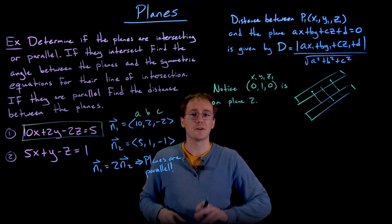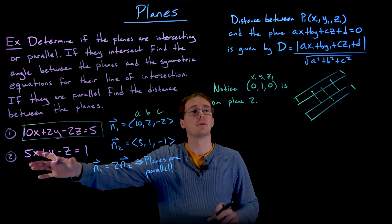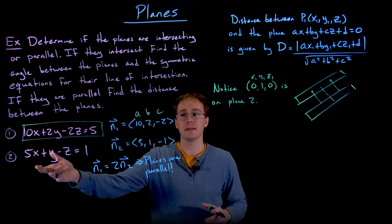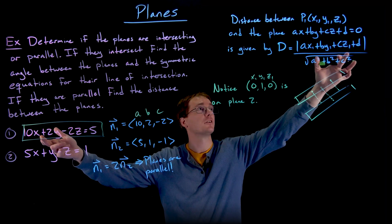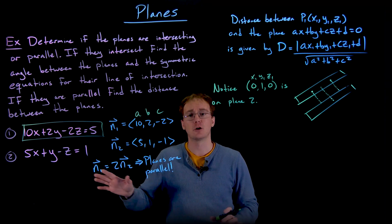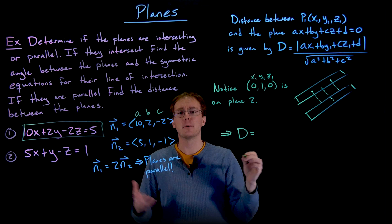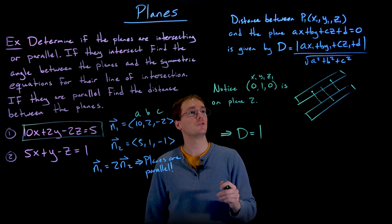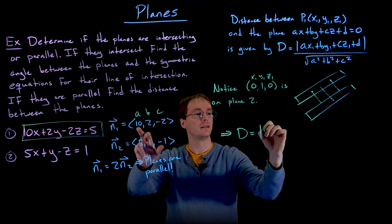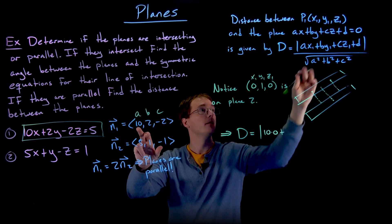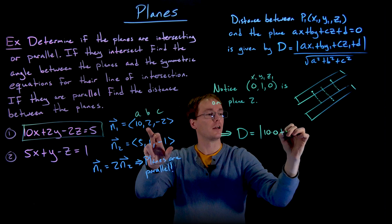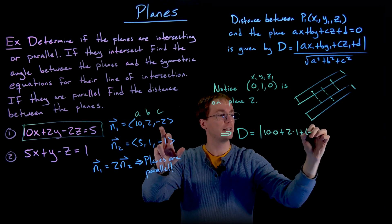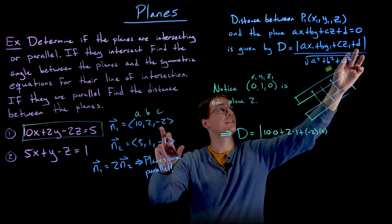We have to be careful not to use the normal vector from the plane that we found the point in — that's a common mistake. This point came from the second plane, so our a, b, c values must come from the first plane, the equation that hasn't really been used yet. Now we can put this all together. Our numerator is the absolute value of: a times x1 (10 times 0), plus b times y1 (2 times 1), plus c times z1 (negative 2 times 0), plus our constant d.